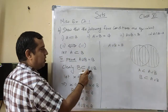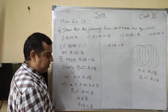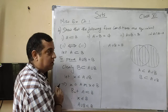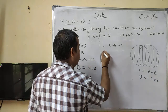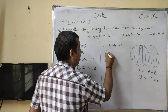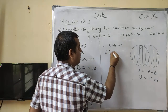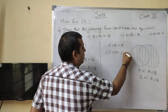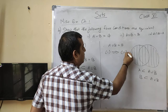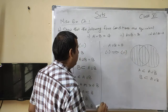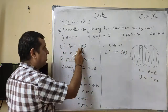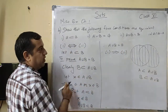Therefore A ∪ B = B. B तो already A ∪ B का subset है, लेकिन यहाँ A ∪ B भी B का subset हो गया — means ये equal आ गया. Therefore, जो first हमने लिया था, इसने proof किया third को. अब हम reverse चलेंगे — अब third, first को proof करेगा.